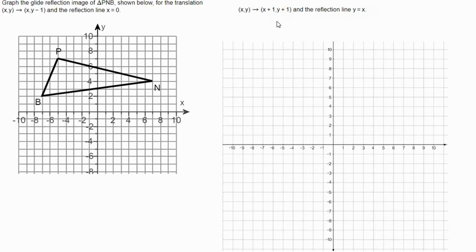So we're going to graph the glide reflection of that triangle below, and then we're going to do the translation rule of (x, y-1). And then we're going to reflect over the line x equals zero. So first I'm going to graph it, move it y minus one, which is just down one. So at the moment I'm moving each point down one. And then I'm going to reflect it over the line x equals zero.